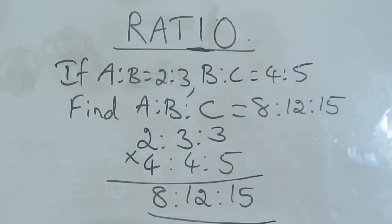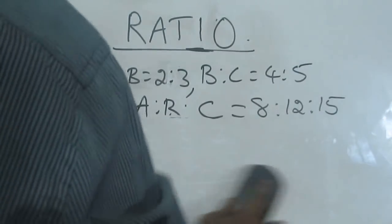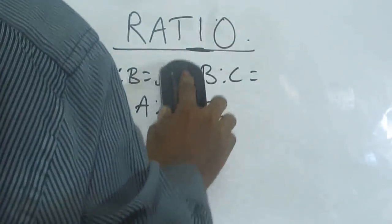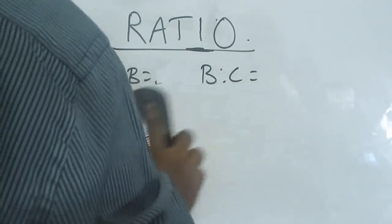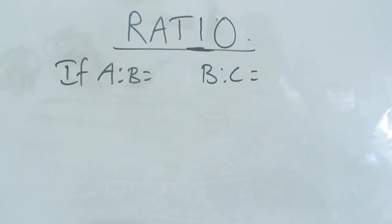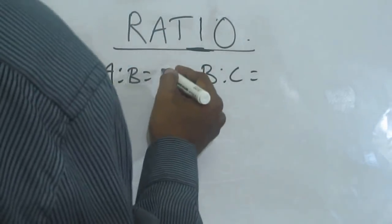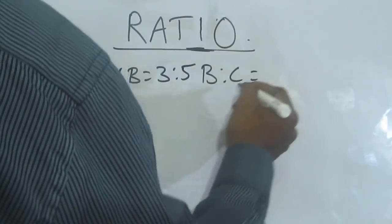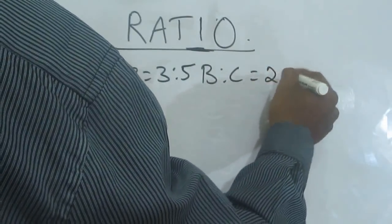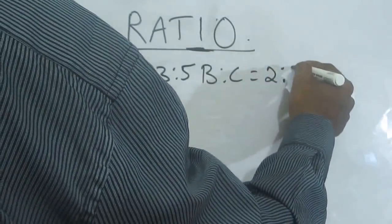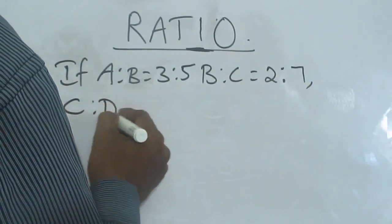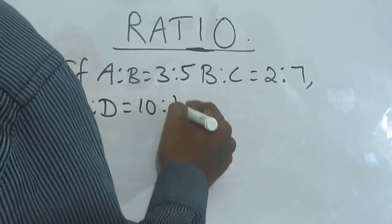We will do another two more questions. Next question. If A is to B is 3 is to 5, B is to C is 2 is to 7, C is to D is 10 is to 11.